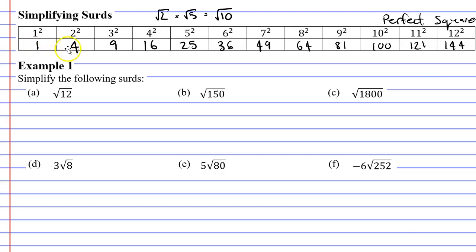These numbers are known as perfect squares because they were made by squaring a whole number. We're going to use these two concepts to simplify the surds in example 1.